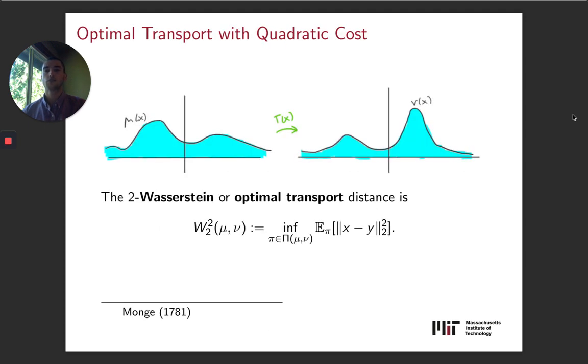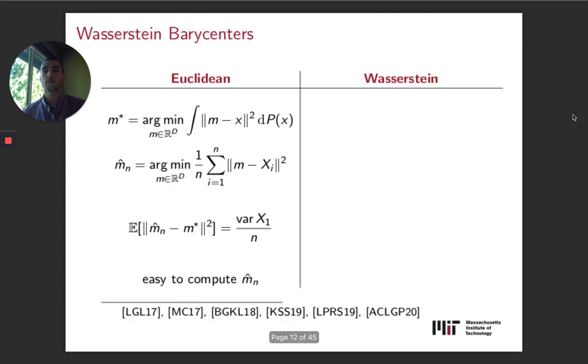So just to kind of briefly introduce optimal transport, optimal transport with quadratic cost is defined by this formula. So mu and nu here are measures supported on R^d, and we're trying to minimize over all couplings with marginals mu and nu, the expected squared quadratic distance. This problem actually goes back to work of the French mathematician Monge in the 18th century.